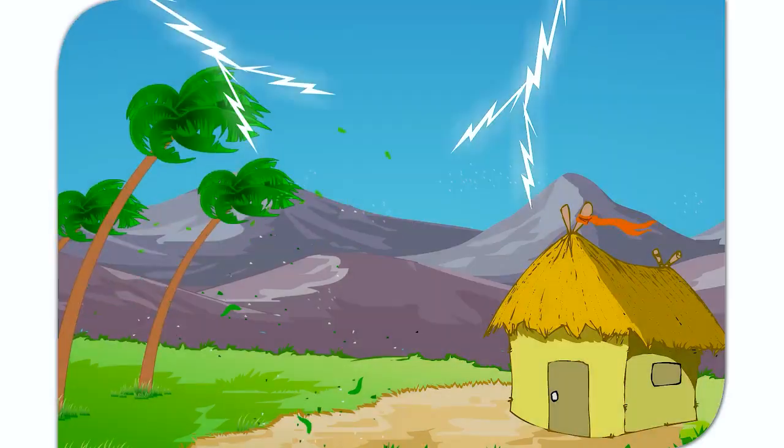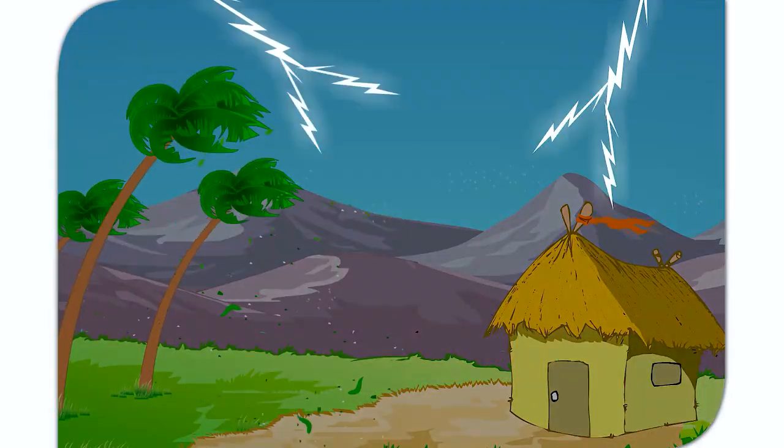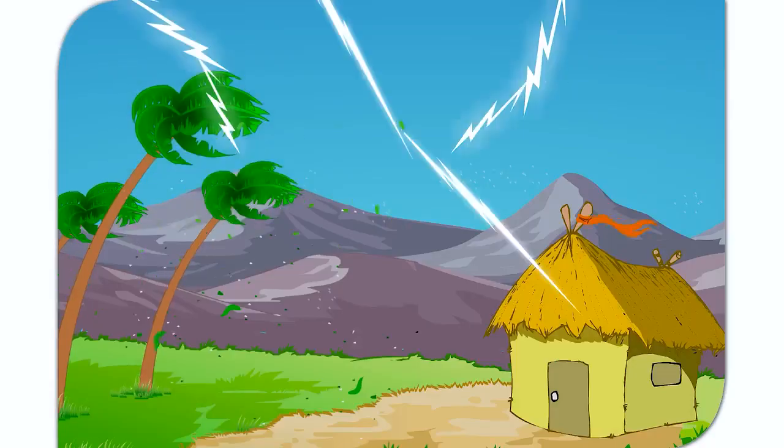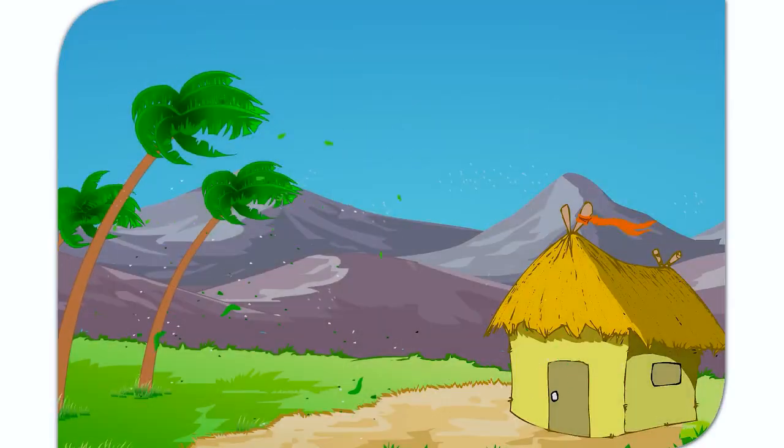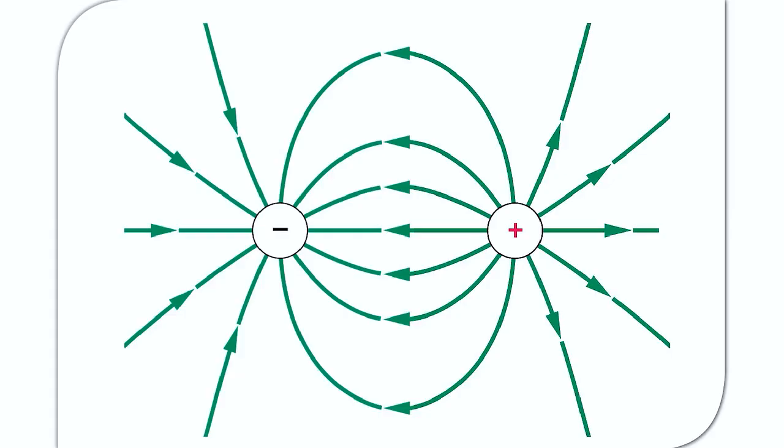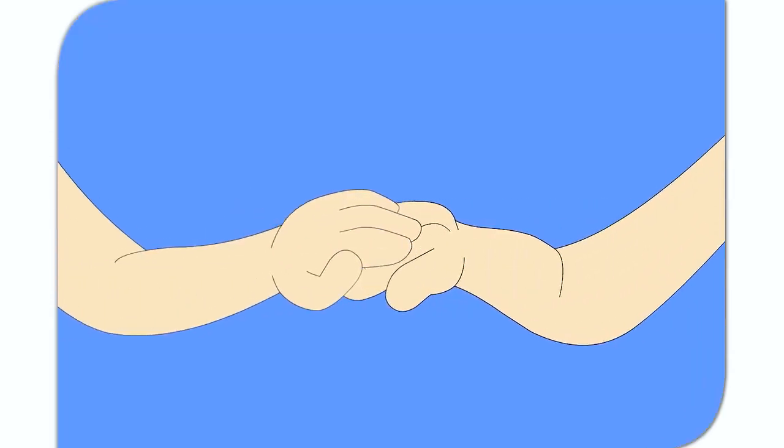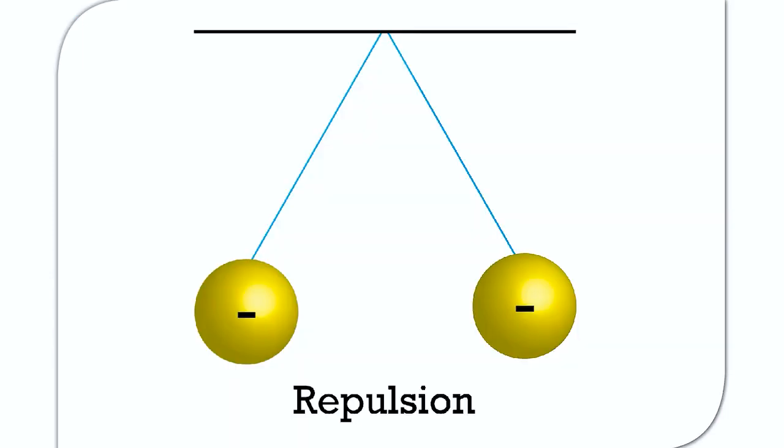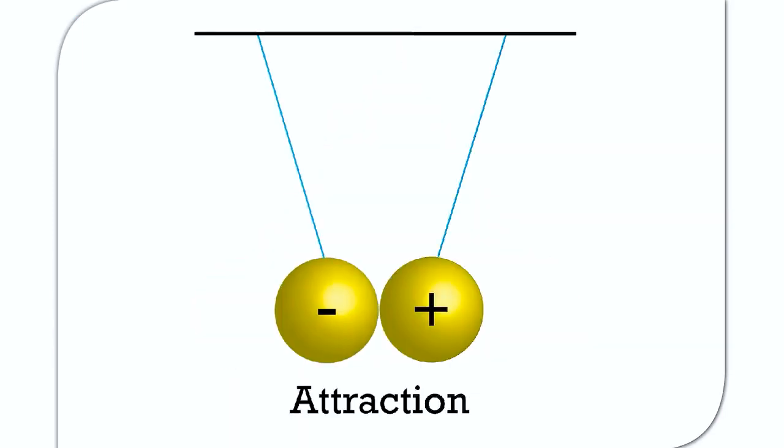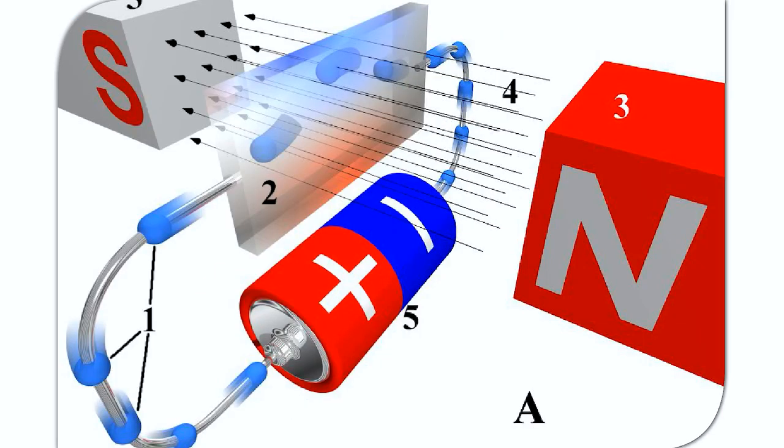Let us understand how this lightning happens. You must have all witnessed electric sparks in the sky. It is called lightning. Lightning is an electric spark that occurs because of electric charge flowing from one cloud to another cloud or within the same cloud. When two objects are rubbed together against each other, both get charged. They acquire equal and opposite charge. The object that gains electrons becomes negatively charged and the object that loses electrons becomes positively charged. Charging occurs by rubbing.